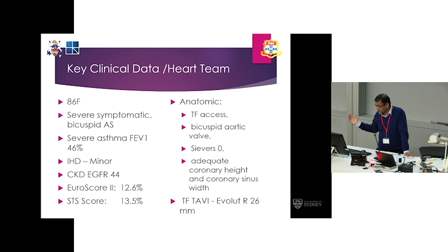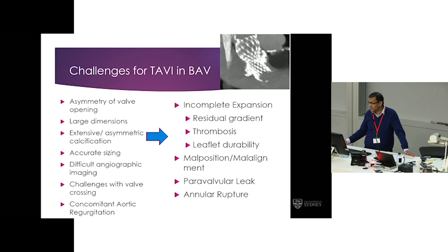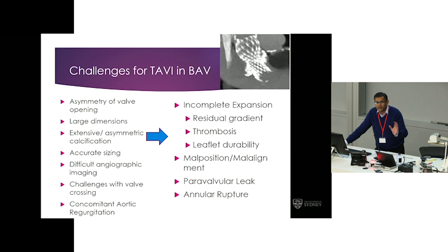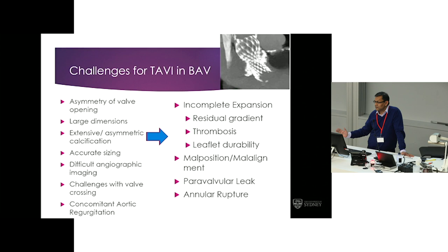Some of the challenges in TAVI for bicuspid anatomy are: it's a very asymmetrical valve with large dimensions and a lot of calcification; sizing is an issue; angiographic delineation is an issue; there can be difficulties with valve crossing; and there's often concomitant aortic regurgitation. The problem relates to the result — if you have incomplete expansion, you get residual gradients, thrombosis, and questions on leaflet durability. You can get malalignment, annular rupture, and paravalvular leaks.